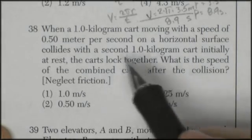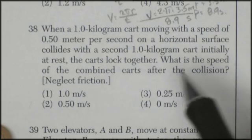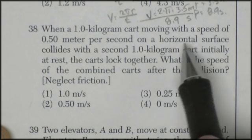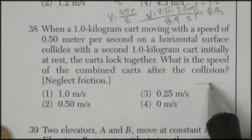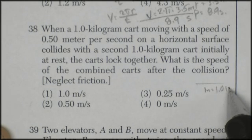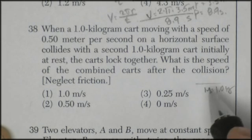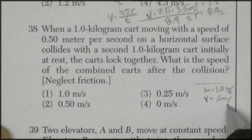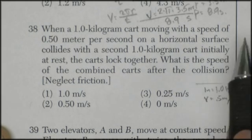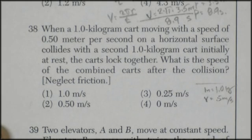Question 38. What a 1 kilogram cart moving with a speed of 0.5 meters per second on a horizontal surface? So mass is 1 kilogram. Velocity is 0.5 meters per second. Horizontal cart, so there's no ramp or anything.